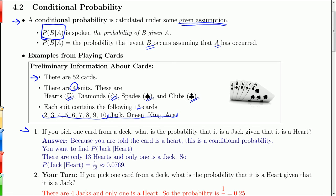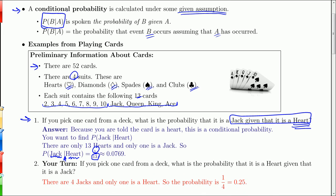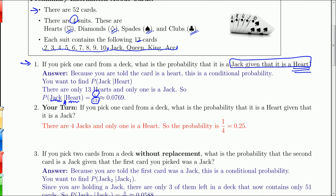Suppose you pick one card from a deck. What is the probability that it is a Jack given that it is a heart? Since there are only 13 hearts and of those 13 hearts only one is a Jack, the probability of getting a Jack given that it's a heart is 1 out of 13. But if you swing that around, what's the probability of getting a heart given that it's a Jack? If you look at Jacks, there's only four Jacks, and of those four Jacks only one is a heart. So it's 1 out of 4, 0.25.